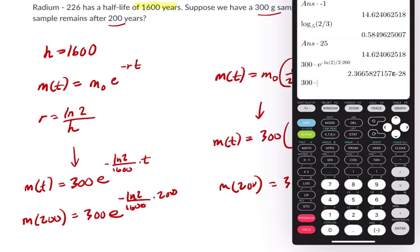I want to go back and see if I can get this to work. Times 2nd LN, negative natural log of 2. I want to divide by 2. We should be divided by 1600. And then that times 200. Okay. So I get 275.1. It worked. So I'm happy about that.